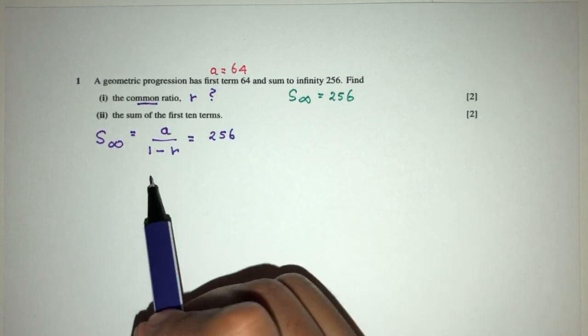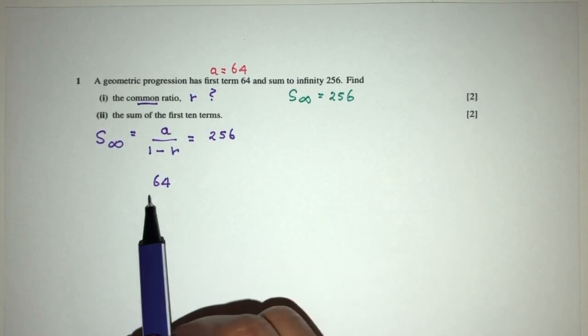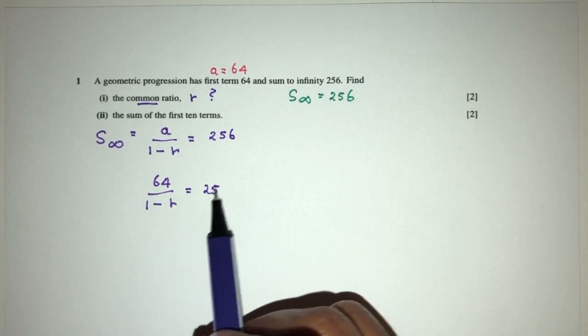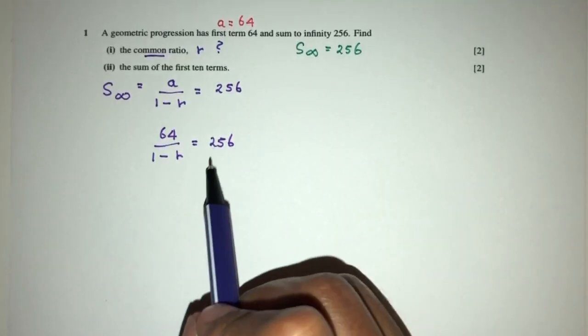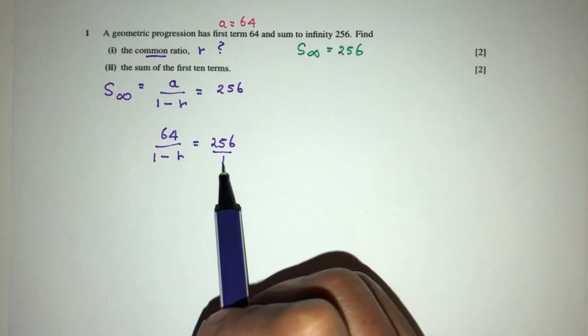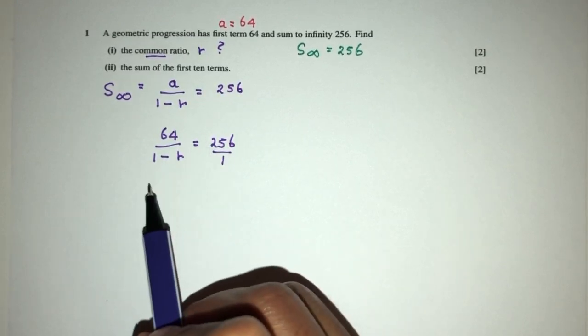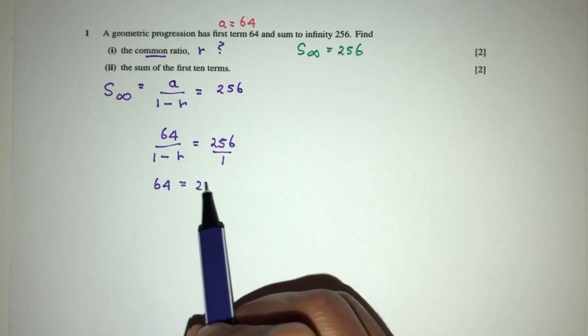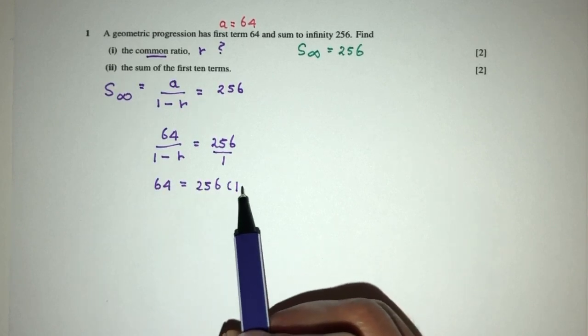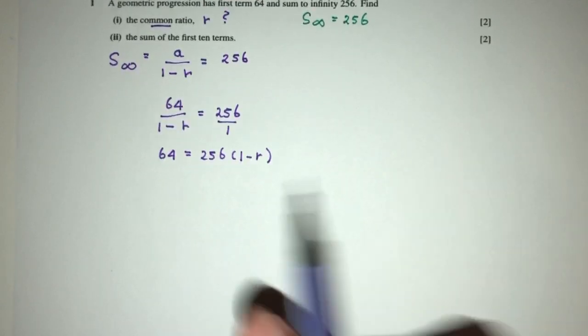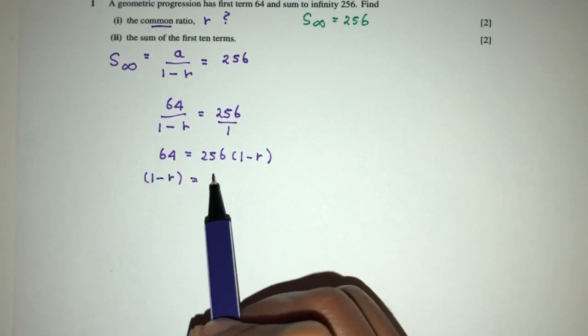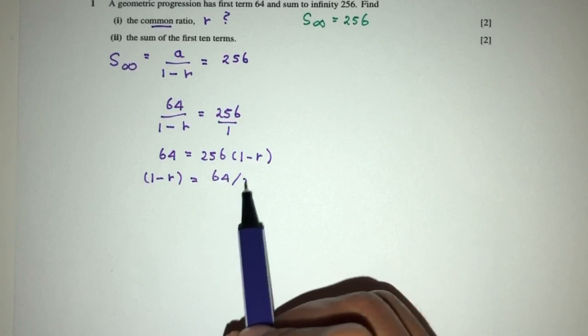Now let's try to replace and solve for the value of R. A we know is the value of 64 over 1 minus R is equal to 256. Now we can just cross multiply, so send this over here, this over here you will have 64 is equal to 256 times 1 minus R. And then we can make this the subject, so 1 minus R will be 64 divided by 256.